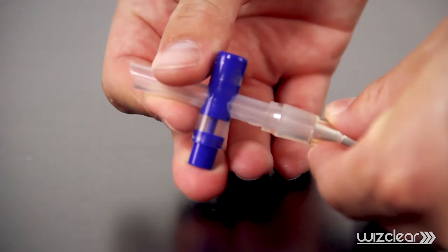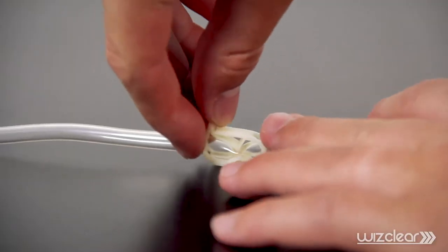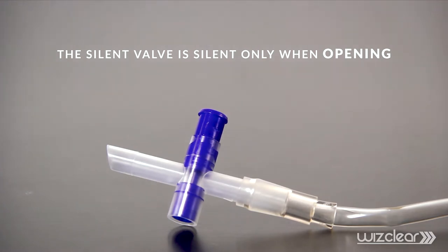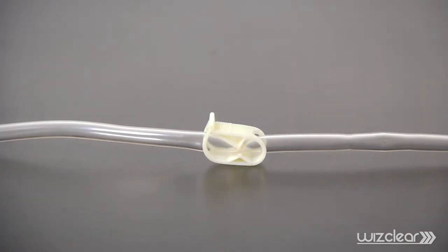Preparation: Before filling the WizClear, it is important to open both the silent push-button valve and the white arming clip. The silent valve is only silent when opening, not closing, so if a more silent experience is desired, leave the valve open after use. The white arming clip is designed to prevent the WizClear from prematurely releasing urine in the event the push-button valve is mistakenly pressed.